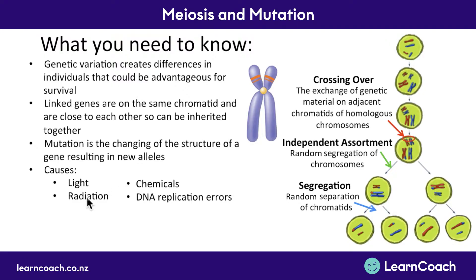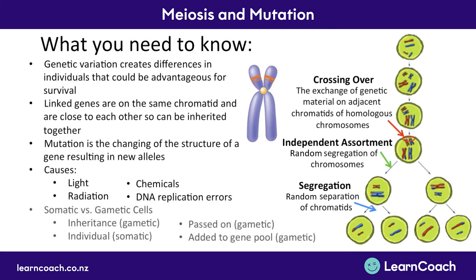Remember: light, radiation, and chemicals are externally imposed, whereas DNA replication errors occur within your body. It's important to know where the mutation happens — if it happens in your somatic cells, your body cells, it only affects the individual. If it happens in your gametic cells, your sex cells, it gets passed on to offspring, added to the gene pool, and is inherited. Those differences are key.